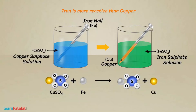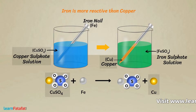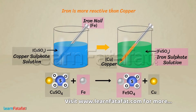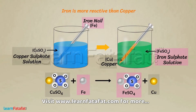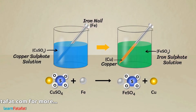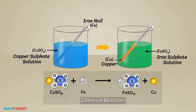By doing so, copper which is in compound form becomes free, while free iron gets attached to sulphate and forms a compound. Clearly, there is a change in chemical composition. Where there is a change in chemical composition, there is a chemical reaction.